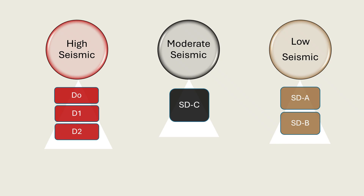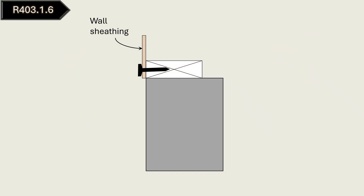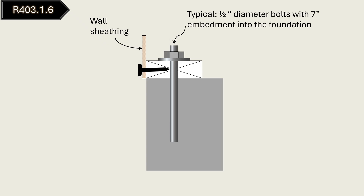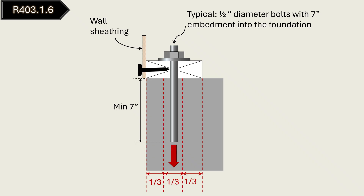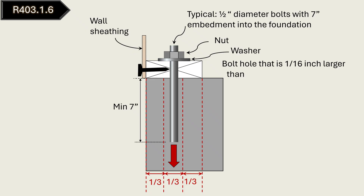According to section R403.1.6, anchor bolts must be at least one-half inch in diameter with a minimum embedment of seven inches into concrete or grouted masonry cells, and shall be placed in the middle third of the sill plate's cross section. The code requires that a nut and washer shall be tightened at the anchor bolt. For walls not provided along braced wall lines, standard washers are permitted. Standard washers are circular, intended for general use with bolts and nuts, and have a bolt hole that is one-sixteenth inch larger than the diameter of the bolt.